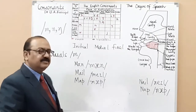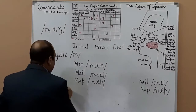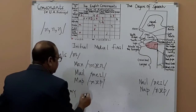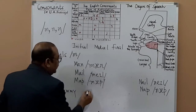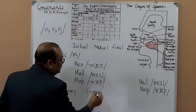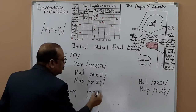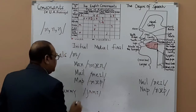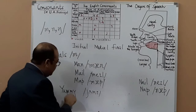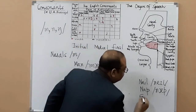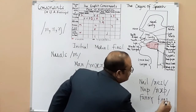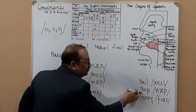Now let's talk about /n/ medially. 'Yummy' — something is yummy. How do you write 'yummy'? This is how you transcribe it. And incidentally, a rhyming word: 'funny'. So you have initial /m/ and medial /m/ examples here.